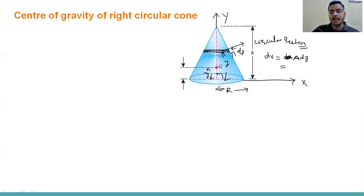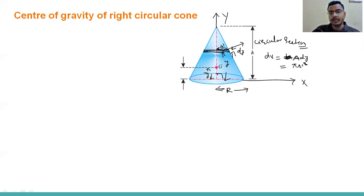The area of this circular section is pi into r-dash square, where r-dash is the radius of the circular cross-section at height y. So dV equals pi r-dash² into dy.